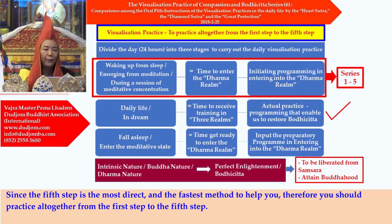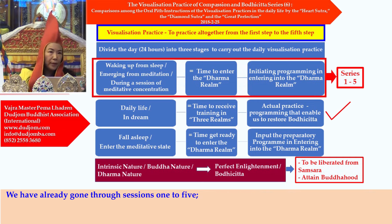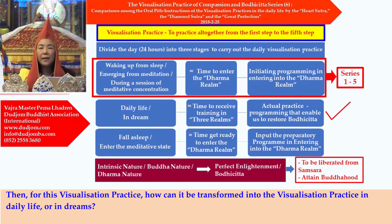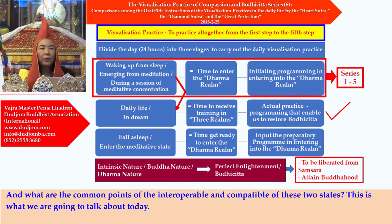These visualization methods from the first to the fifth step must be practiced all at once. If you only practice from the first step to the fourth step but miss the fifth step, this will be a serious trouble. Since the fifth step is the most direct and fastest method to help you, therefore you should practice altogether from the first step to the fifth step. We have already gone through sessions one to five, talking about how to do the visualization practice during the states of waking up from sleep, emerging from meditation, and during a session of meditative concentration. For this session, how can this be transformed into the visualization practice in daily life or in dreams?